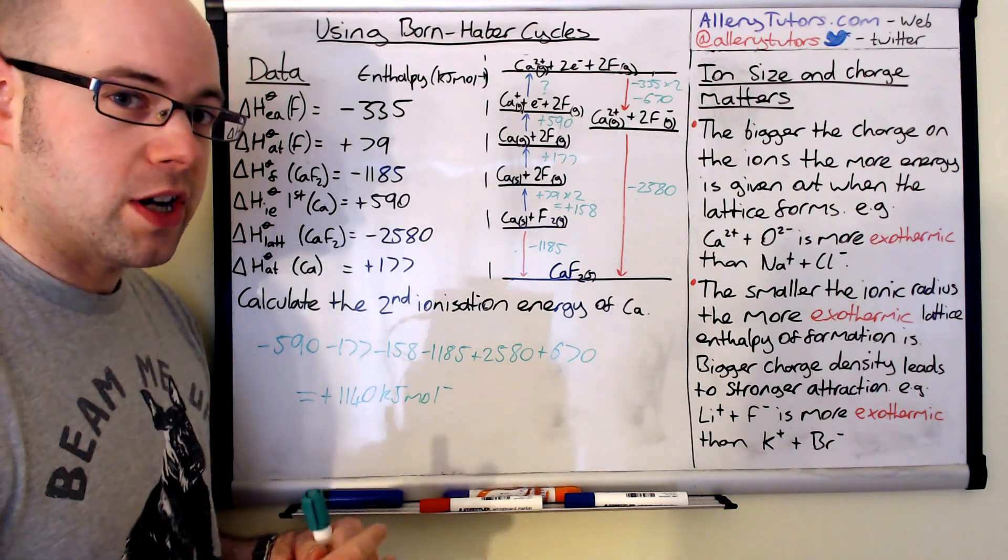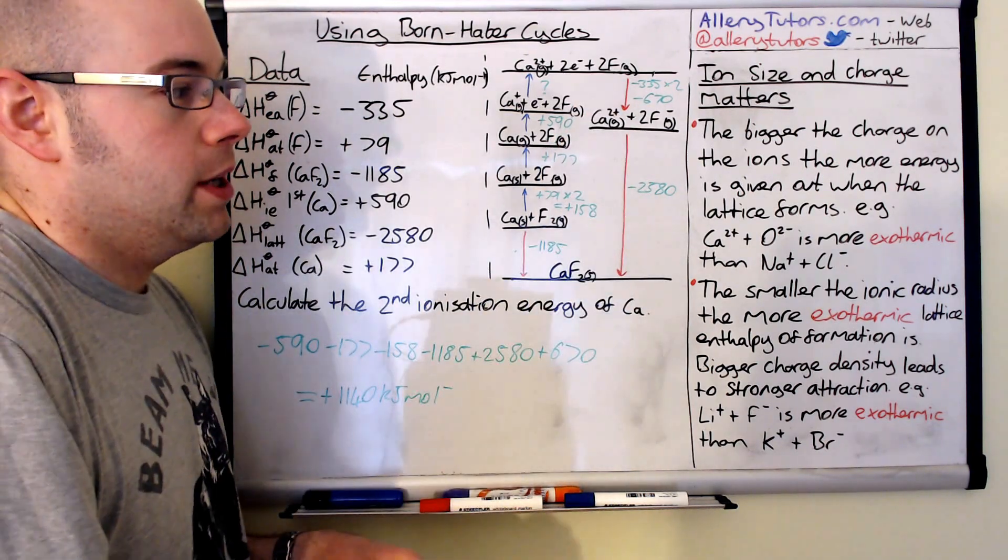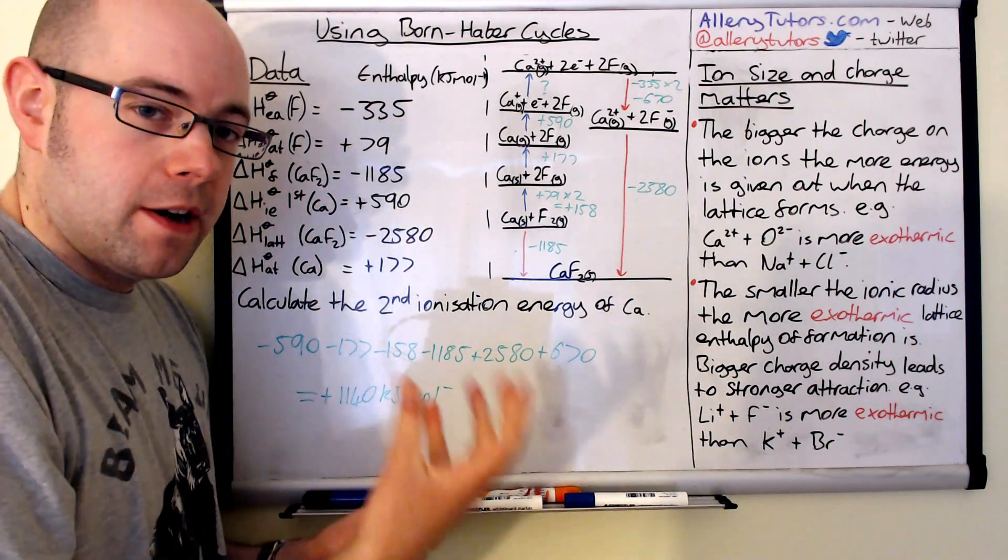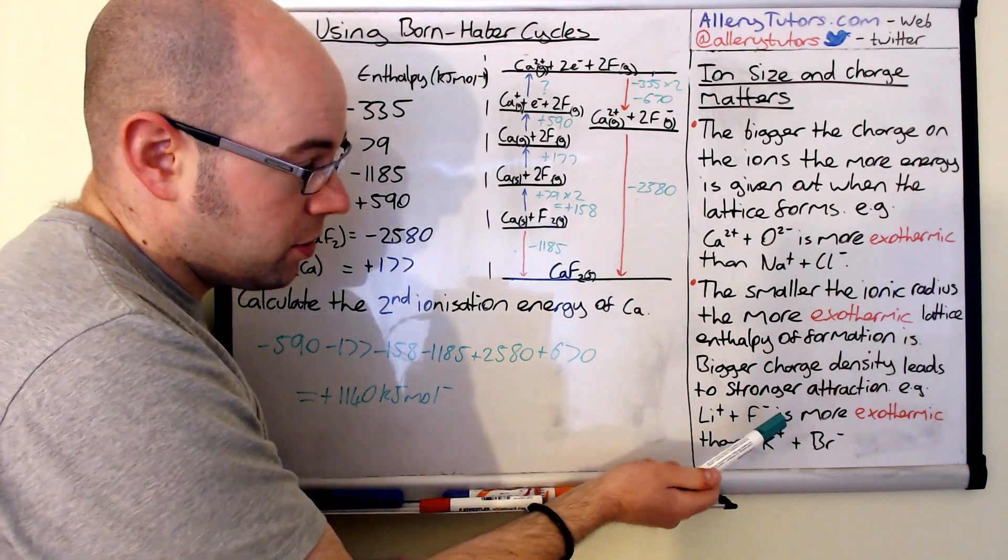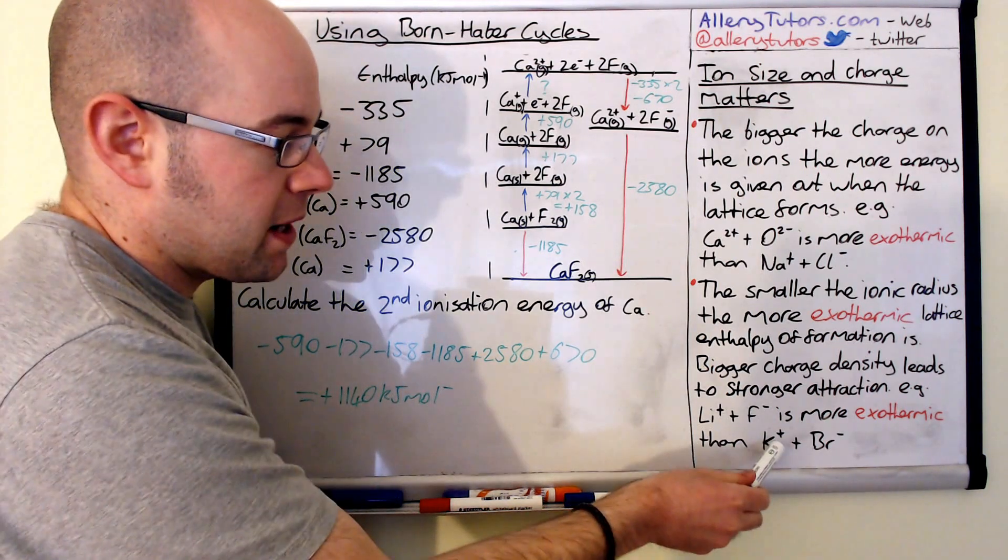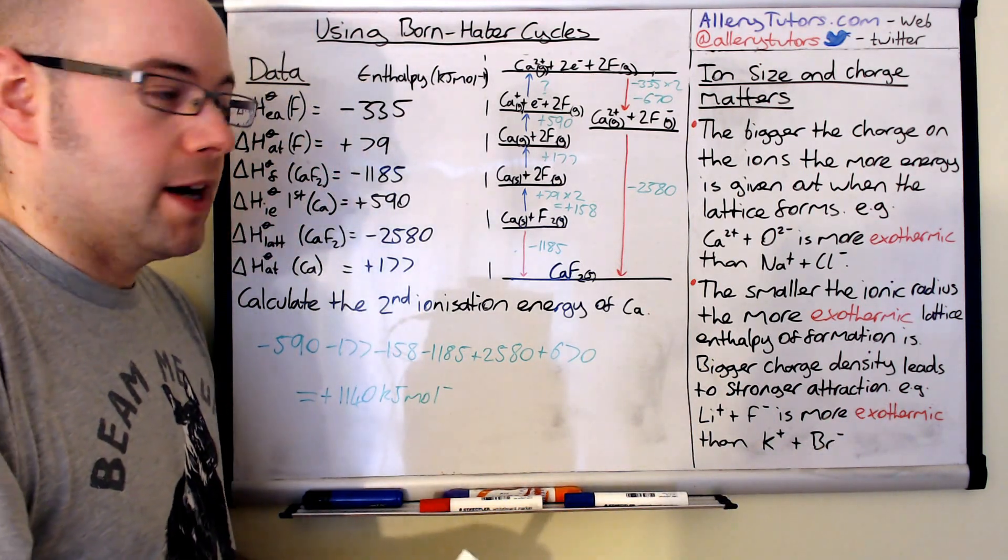And the reason why is because the smaller ions have a bigger charge density and so therefore the attraction between oppositely charged ions is a lot more stronger and therefore your reaction will be a bit more exothermic. So for example the small ions of lithium and fluorine combining together will be more exothermic than the bigger ions of potassium and bromide ions.